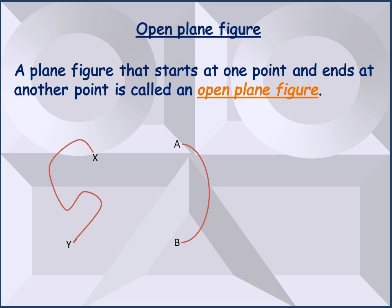Open plane figures are not always drawn with curved lines. We can use straight lines also to draw open plane figures. As in this example, we have used straight lines to draw an open plane figure which begins at the point G and ends at the point H.